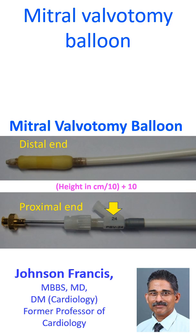24 mm, 26 mm, and 28 mm are the usual sizes being used. Each balloon can be used for a range of inflations, and the size is adjusted by changing the volume of dilute contrast used for balloon inflation. The resultant size is checked before introduction of the balloon into the vascular system.